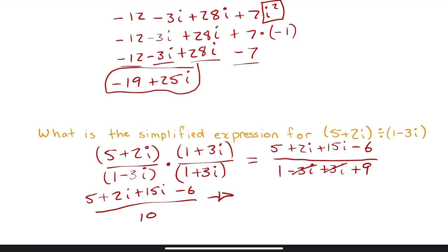So then all we have to do is add like terms on the bottom. That's going to give us just, I'm going to rewrite here on the bottom left, 5 plus 2i plus 15i minus 6 over, all over 10, because 1 plus 9 is 10. Now let me go ahead and add like terms on the top. That 5 plus negative 6 should just give me negative 1. And then 2i plus 15i should come out to 17i, all over 10.